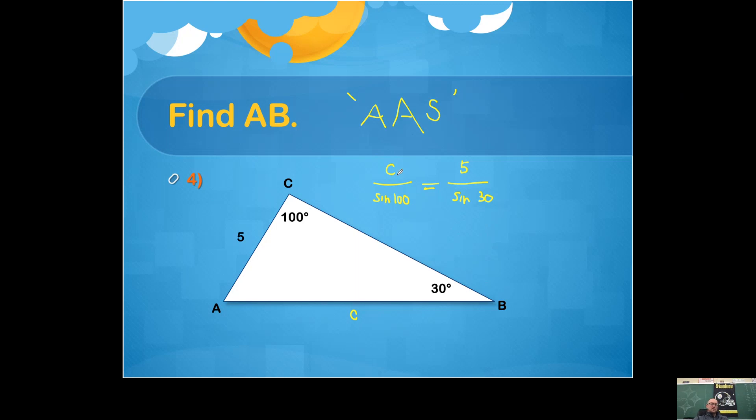Now, you have three of these four things. All you need to do at this point is cross-multiply. So we're going to take 5 times the sine of 100, and that's just a number. And we're going to set that equal to c times the sine of 30.